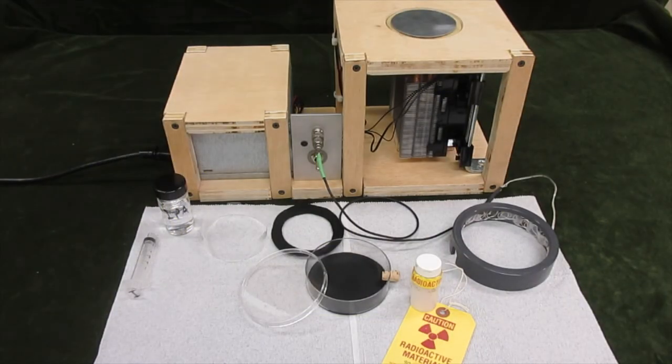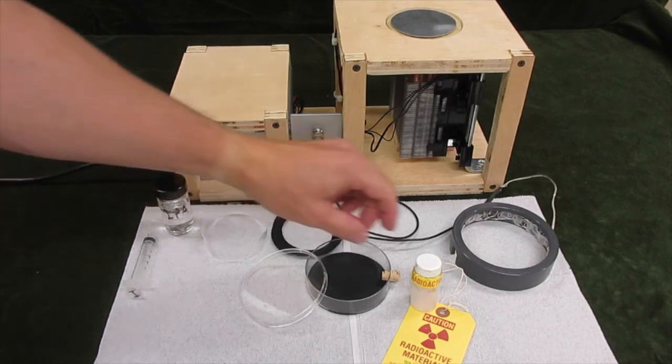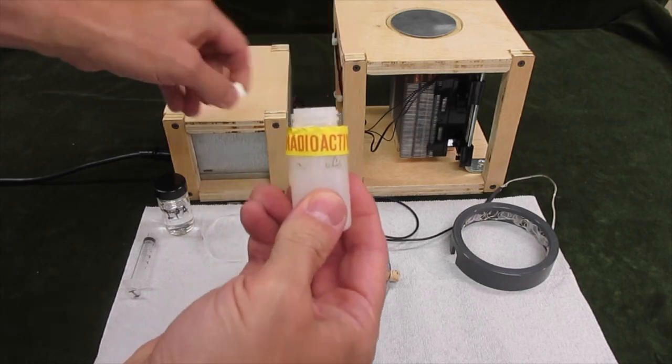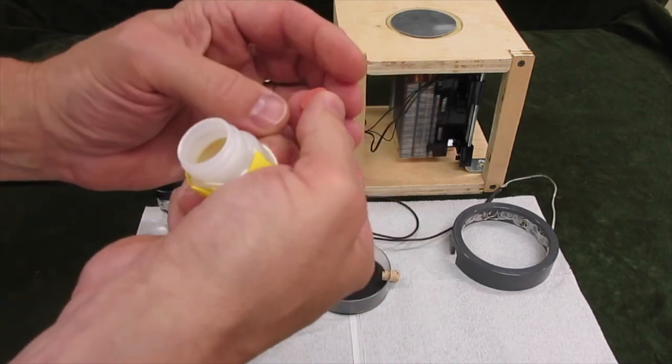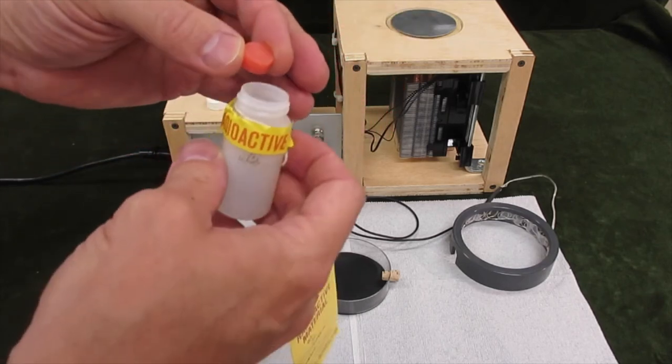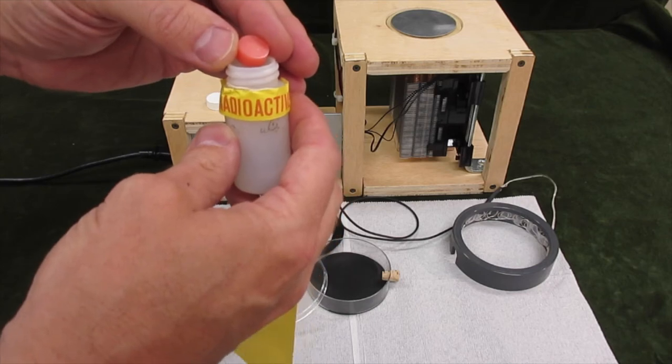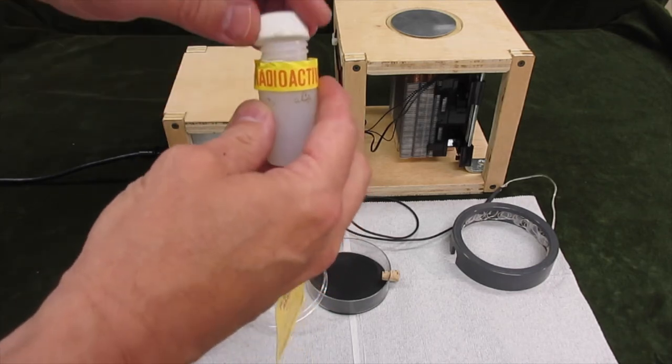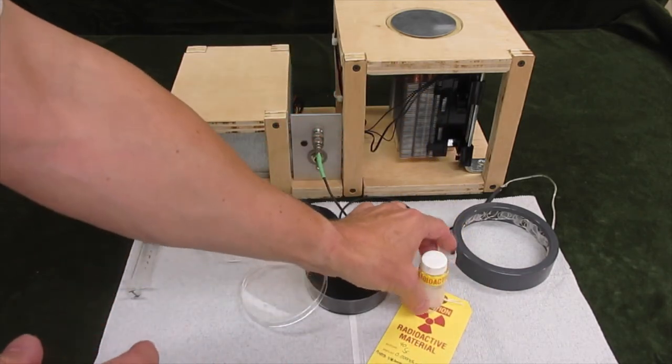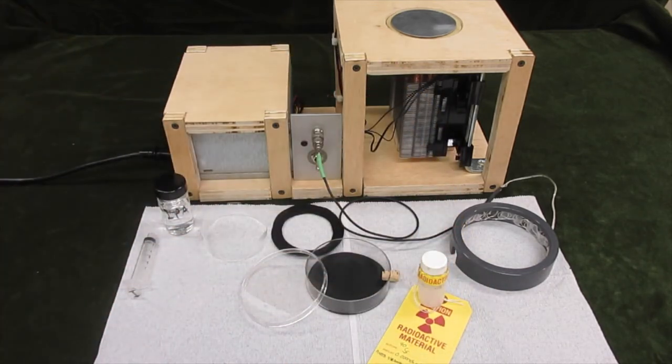The next material that we'll take a look at is strontium-90. Strontium-90 is a beta emitter that will be placed either in or next to the chamber. The source is in the form of a small button of plastic with a small pin head size amount of strontium-90 embedded in it and we'll put that in the cloud chamber or next to the cloud chamber and we'll take a look at what the beta particles from that material look like.